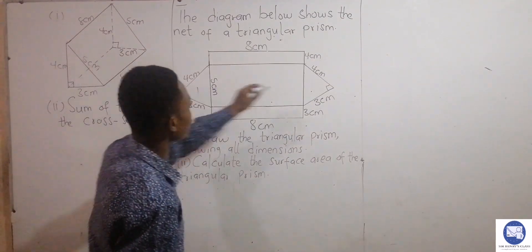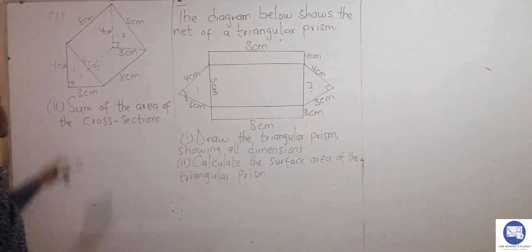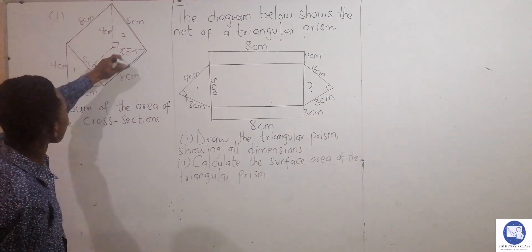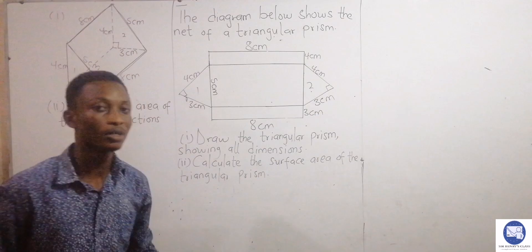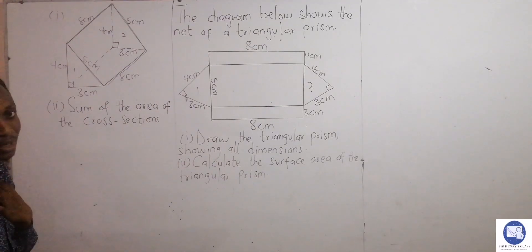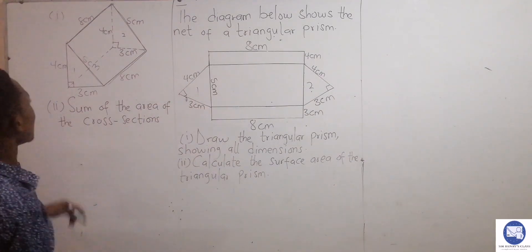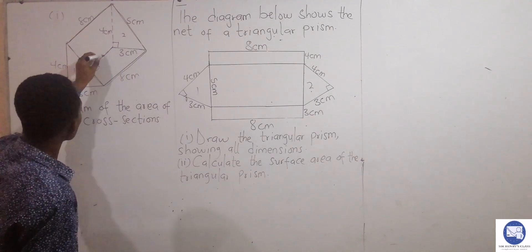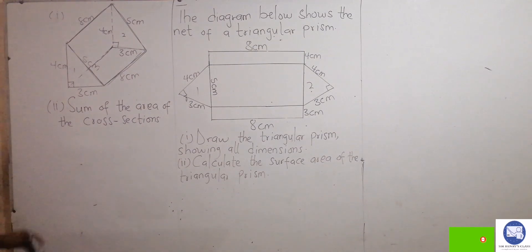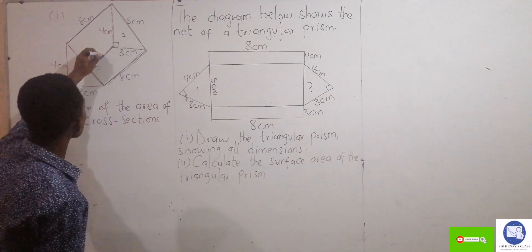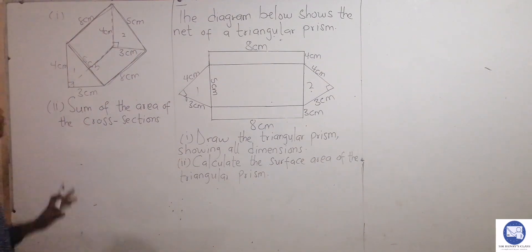Let us identify them. This triangle and that triangle — those are two of them. Then we look at the rectangles. This rectangle, this rectangle, and this rectangle — that's three rectangles. So I'll call the front-facing one the front face, then one of the rectangles is the base at the bottom, and the third one is the back rectangle. I have all five cross sections.